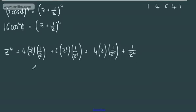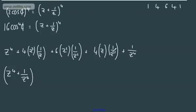I'm now going to collect these up. We have z⁴ + 1/z⁴. Then from the 4·z³·(1/z) and 4·z·(1/z³) terms, we get 4·(z² + 1/z²). And the middle term 6·z²/z² cancels to give plus 6. So we have: (z⁴ + 1/z⁴) + 4·(z² + 1/z²) + 6.